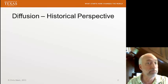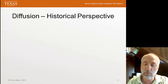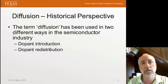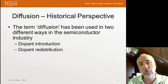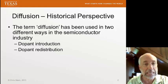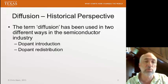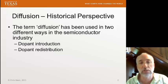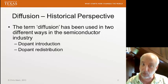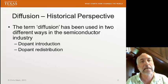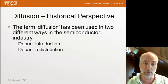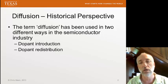Let's think about diffusion from a historical perspective. The reason for doing this is that the term diffusion is actually used in two different ways in the semiconductor industry, which can be more than a bit confusing. Historically, we would introduce the dopant to the wafer in the same step that we would redistribute the dopant. We would put dopant on the top of the wafer and then let it diffuse into the wafer. So historically, diffusion has meant the combination of these two steps: introducing the dopant and then redistributing it through the wafer via a classical diffusion process.